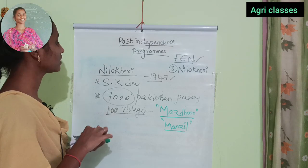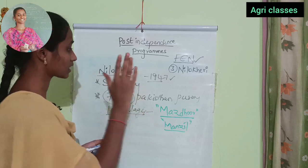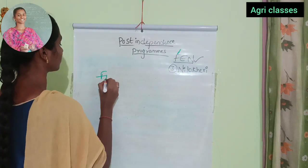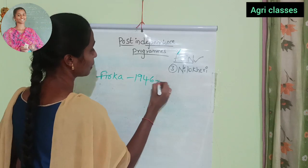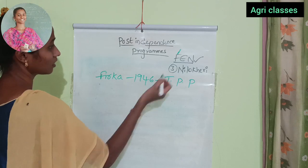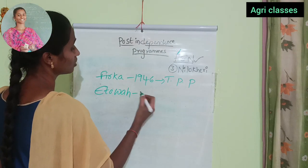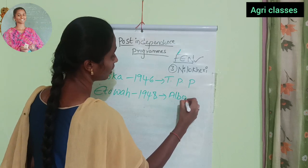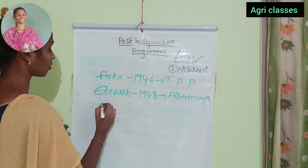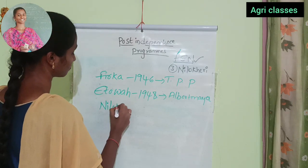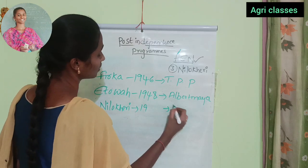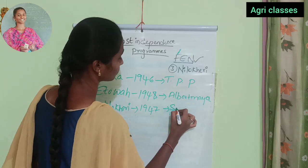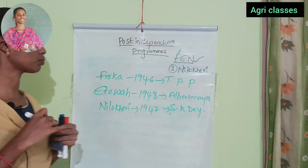We will now recap these three important pre-independence projects with their years and concern persons. First: FIRKA, year 1946, concern person Tangudori Prakasham Pantulu. Second: ETAWA project, year 1948, concern person Albert Mayer. Third: Nilo Keri project, year 1947, concern person S.K. Dey.